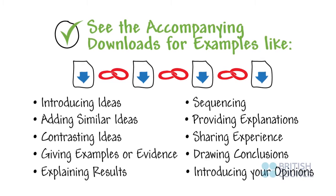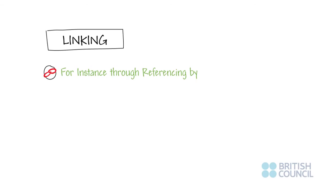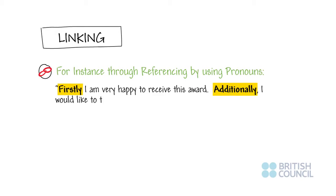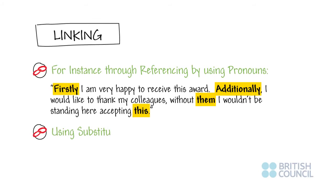Linking can be done in a variety of other ways. For instance, through referencing by using pronouns: 'Firstly, I'm very happy to receive this award. Additionally, I would like to thank my colleagues. Without them, I wouldn't be standing here accepting this.' And also using substitution: 'Famous people deserve a private life. But celebrities also sell newspapers.'